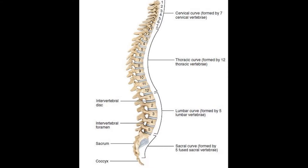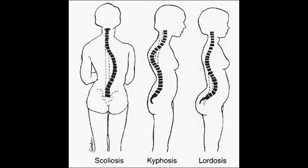The normal shape of the spine is the shape of an S. You have abnormalities. For example, if you have a side-to-side abnormal curvature of the spine, it's known as scoliosis. When you have an abnormal outward curvature of the upper back, it is known as kyphosis. And when you have an inward curvature of the lower back, it's known as lordosis. You can try to remember lumbar and lordosis — L for both.